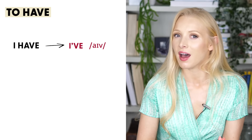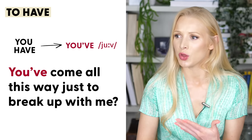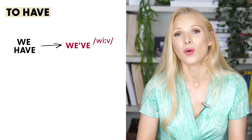Let's take a look at the easier ones. 'I have' is 'I've' — I've been here all day. 'You have' is 'you've' — you've come all this way just to break up with me. 'We have' is 'we've', or the weak form 'with' — we've taken the dog to the vet. And 'I had' becomes 'I'd' — I'd been studying English for three years before moving to Leeds.